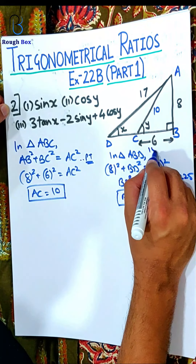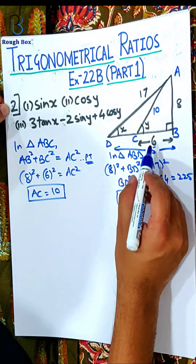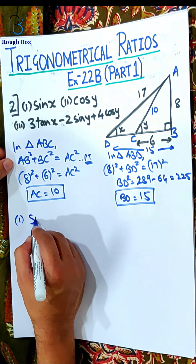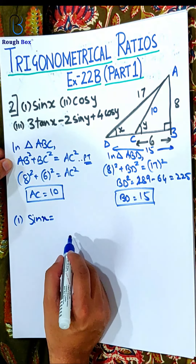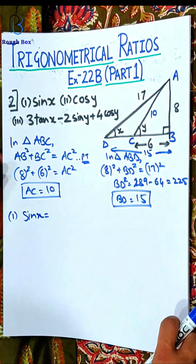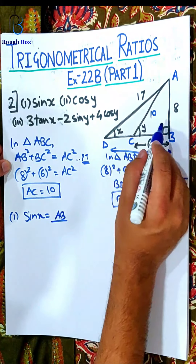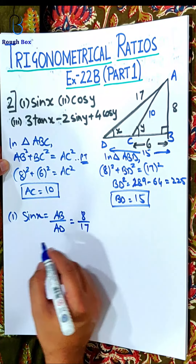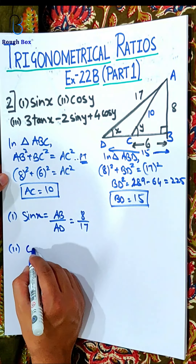So we get the entire BD as 15. Now I know all the sides: 15, 10, 8, 6, 17. Let's hit at each of the ratios. So sin x — opposite upon hypotenuse. You may not write all that detail now; in the earlier exercise we were writing so that we learn it well, but now that you've been thorough with it, you can go directly. So x's opposite is AB, and hypotenuse is AD. So that will be 8 by 17. How many got this first part correct? 8 by 17. Great job.